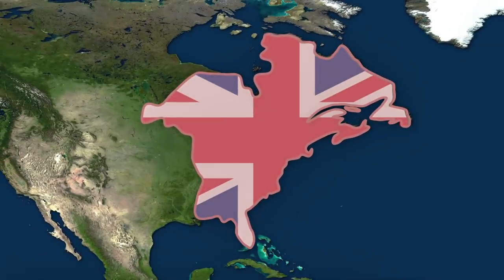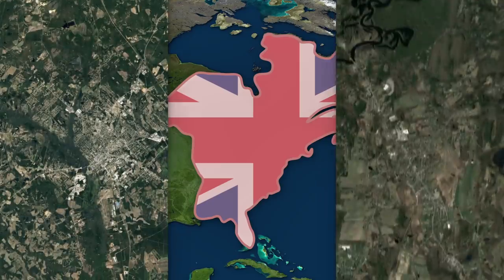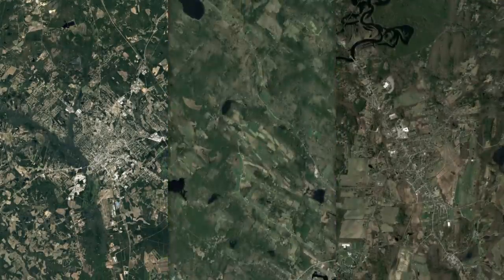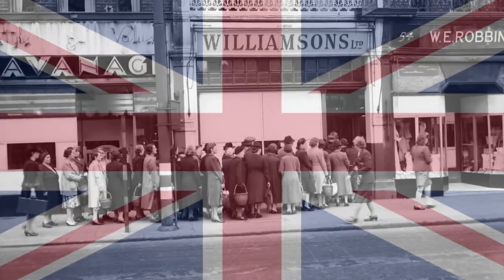In what was the British part of North America, land distribution was done with little organization, so things looked like this and this and this. They may try to disguise it with their recreational queuing, but Britain loved chaos.